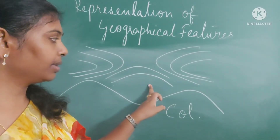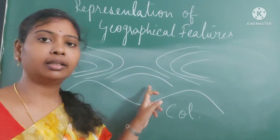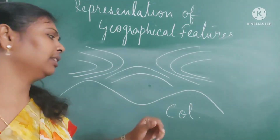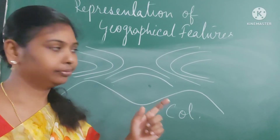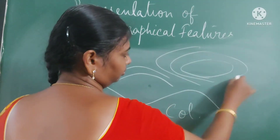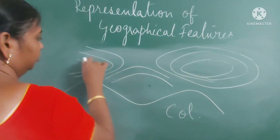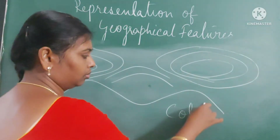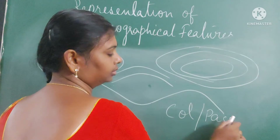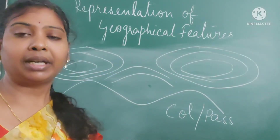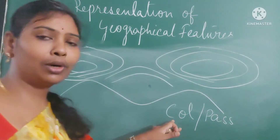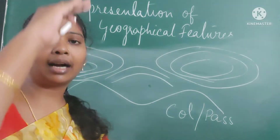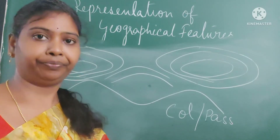This is how we represent a pole. Generally a pole is having a lesser elevation than a pass. The same representation is used even for a pass. Pole or pass is represented in the same way, but the difference is that a pole has lesser elevation or altitude whereas a pass has a higher altitude than a pole.